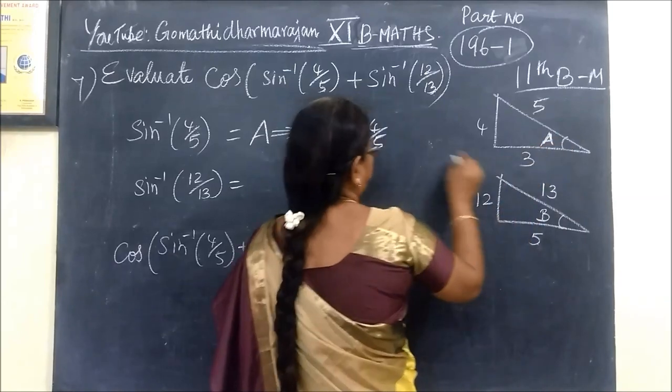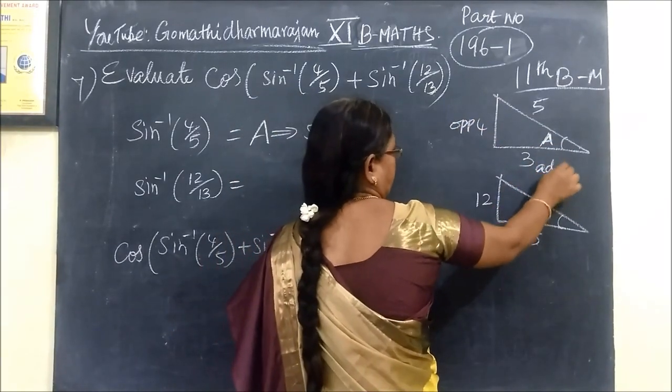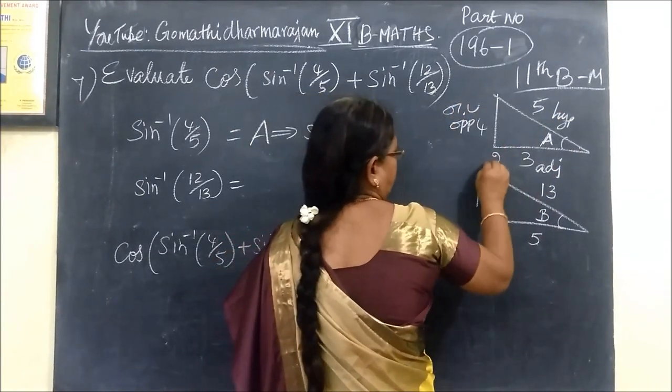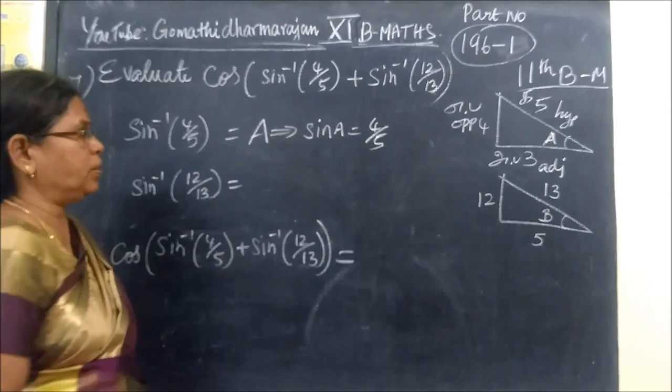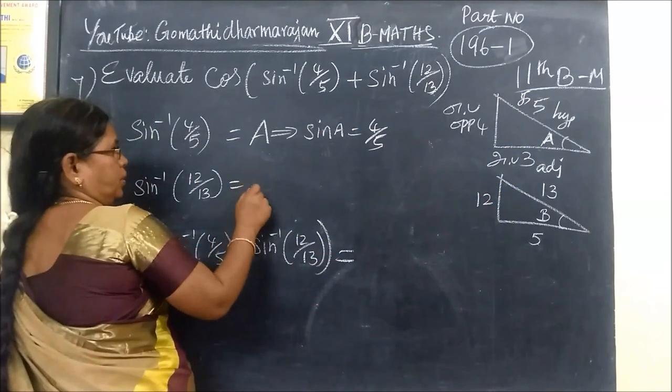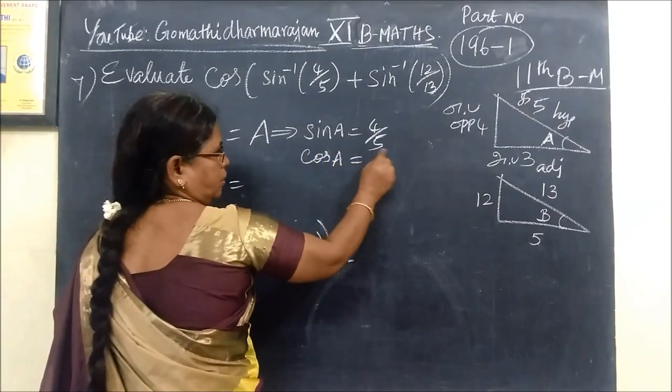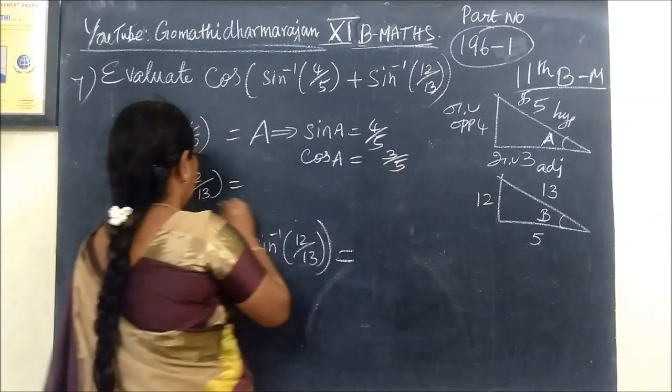This is the opposite side. This is adjacent side. This is the hypotenuse. Cos A is adjacent by hypotenuse, which equals 3 by 5.